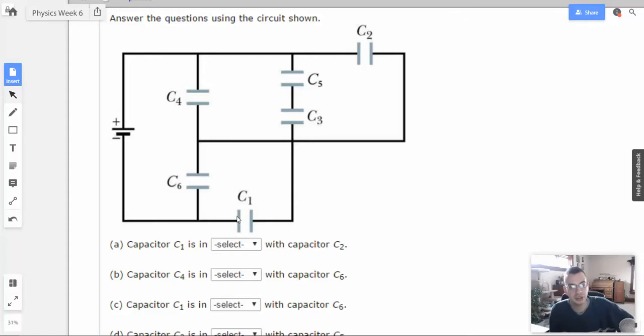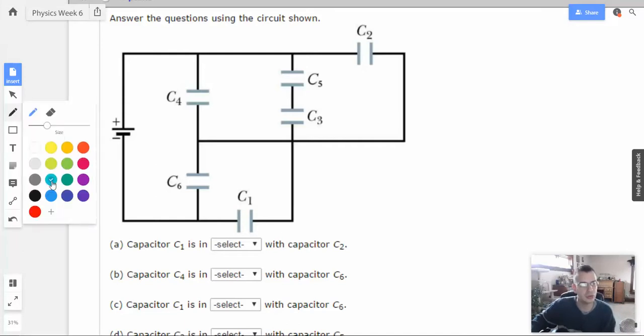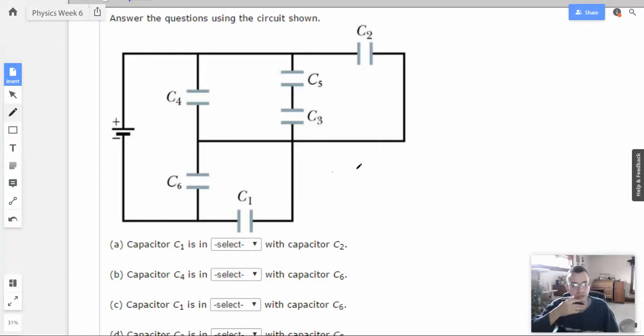Now if we look at C1 and C2, they must have nothing in common. It's not going to be in parallel, because if it was in parallel, then this wire right here would have to be somehow connected to this wire right here, and it's not, without going through a capacitor. So, they're not in parallel.